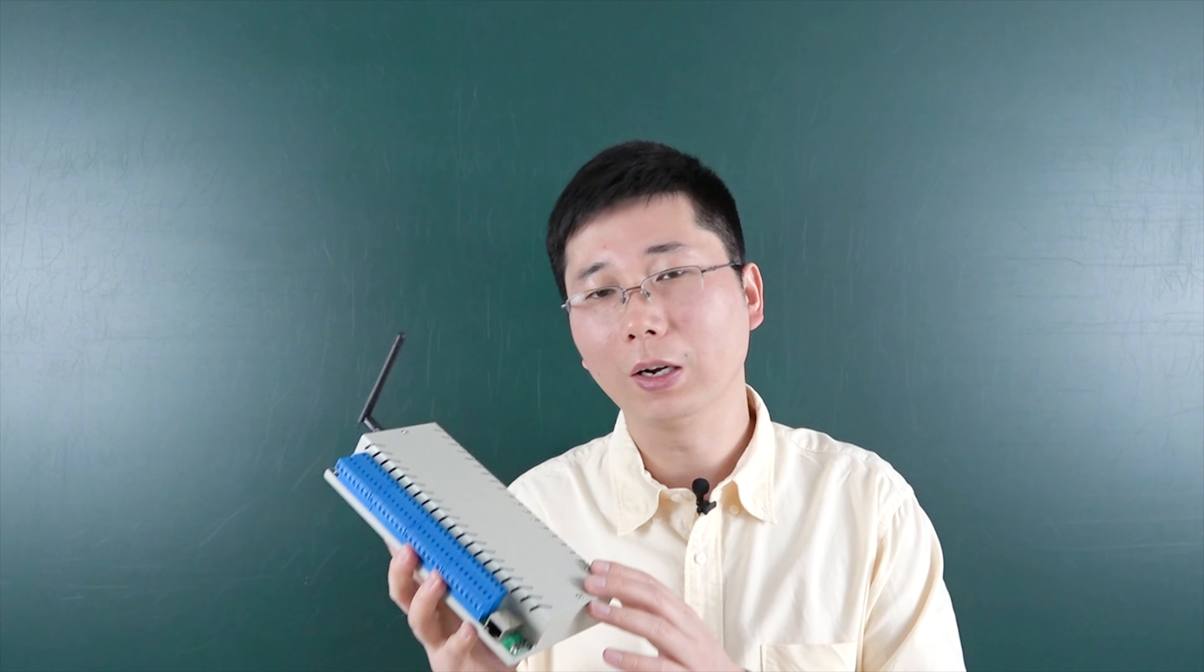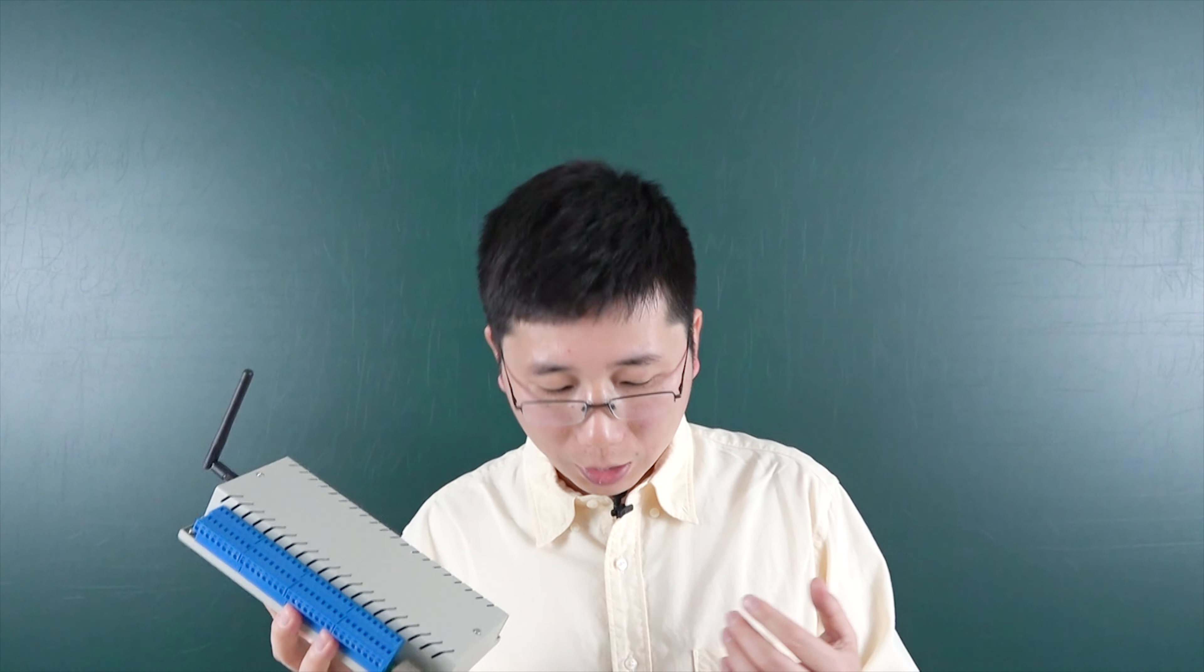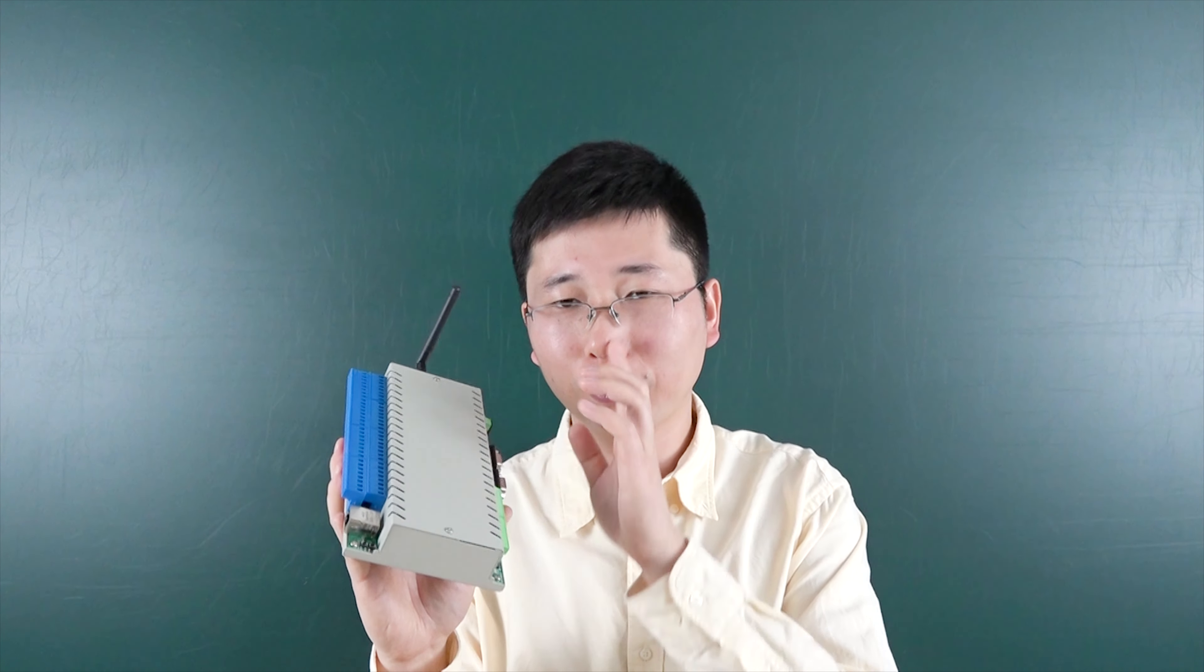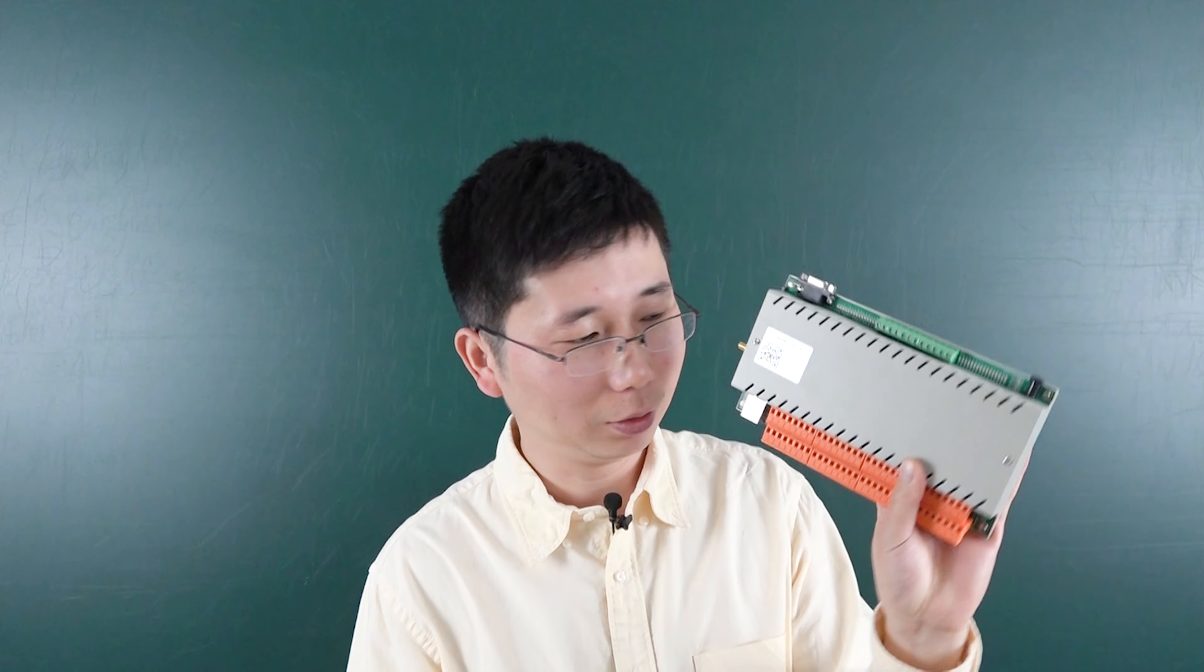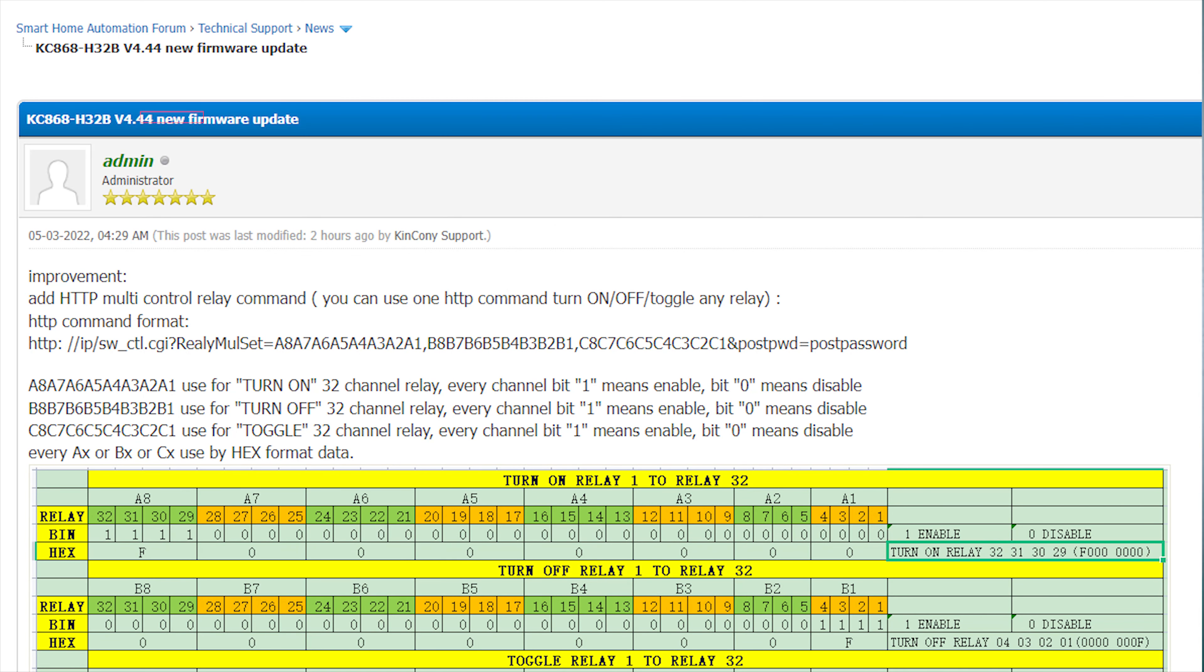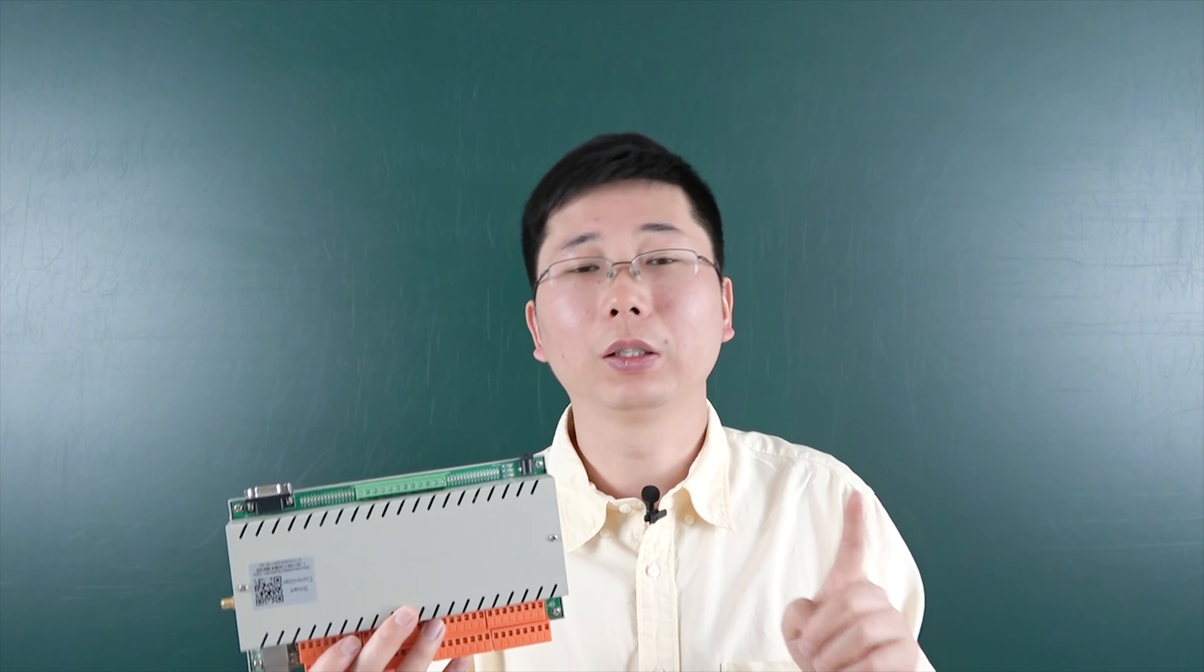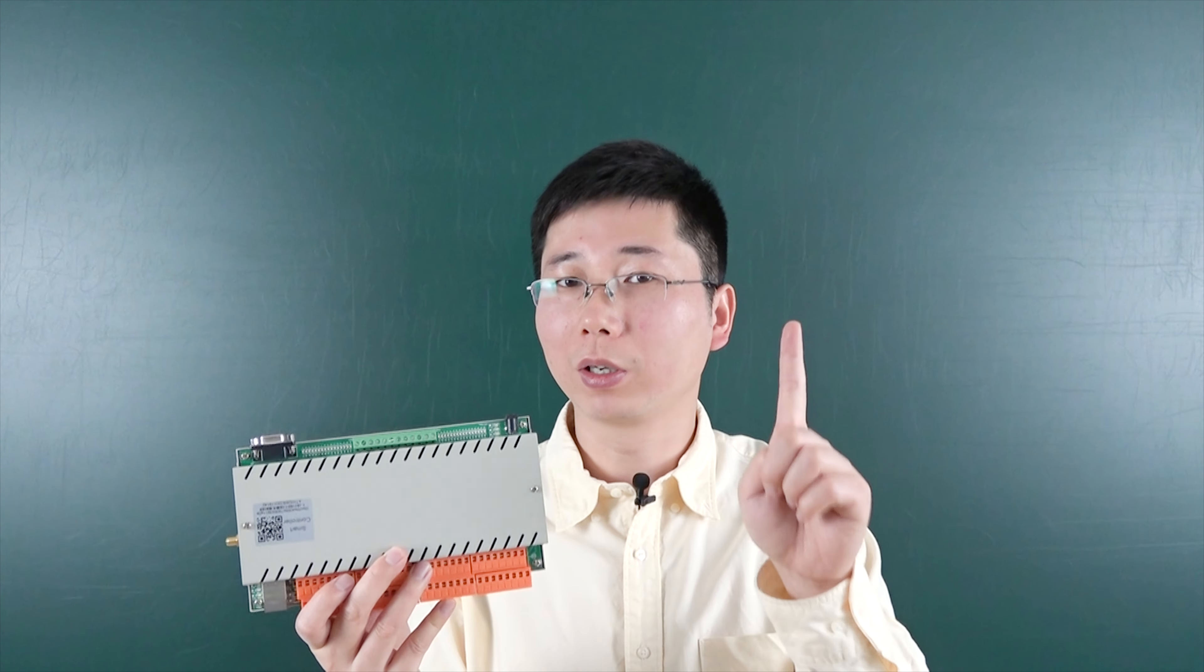The CRL-B will support HTTP commands, so we have also updated the new firmware for the H32-B. Now the H32-B new firmware will support multi-relay control by one command. You can use one command to turn on some relays, turn off some relays, or toggle some relays.